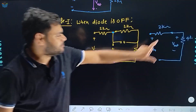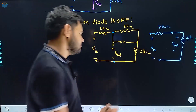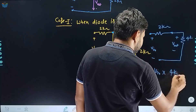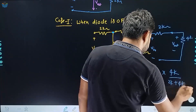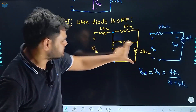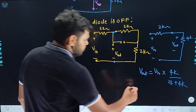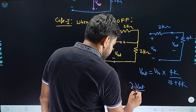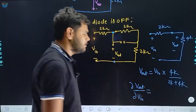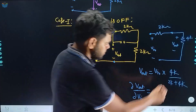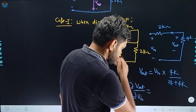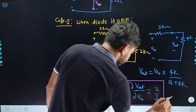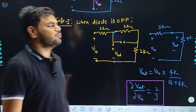V_out by V_in का ratio निकालते हैं। Voltage divider rule से: V_out = V_in × 4K / (2K + 4K)। इससे V_out / V_in = 4/6 = 2/3। यह पहली condition में obtain हुआ जब diode को off state में माना — gain = 2/3 ≈ 0.67।